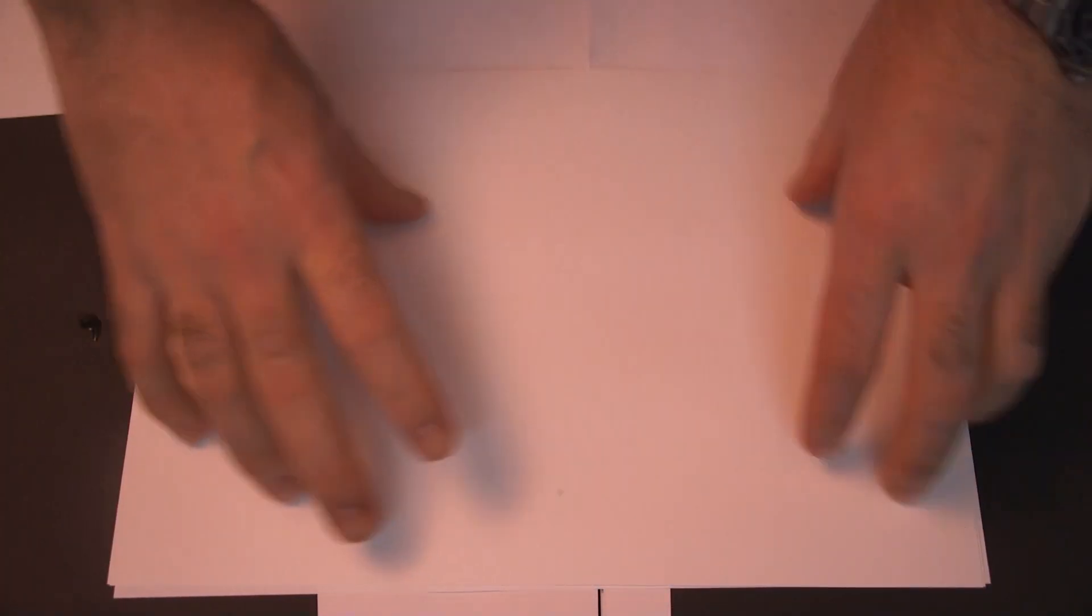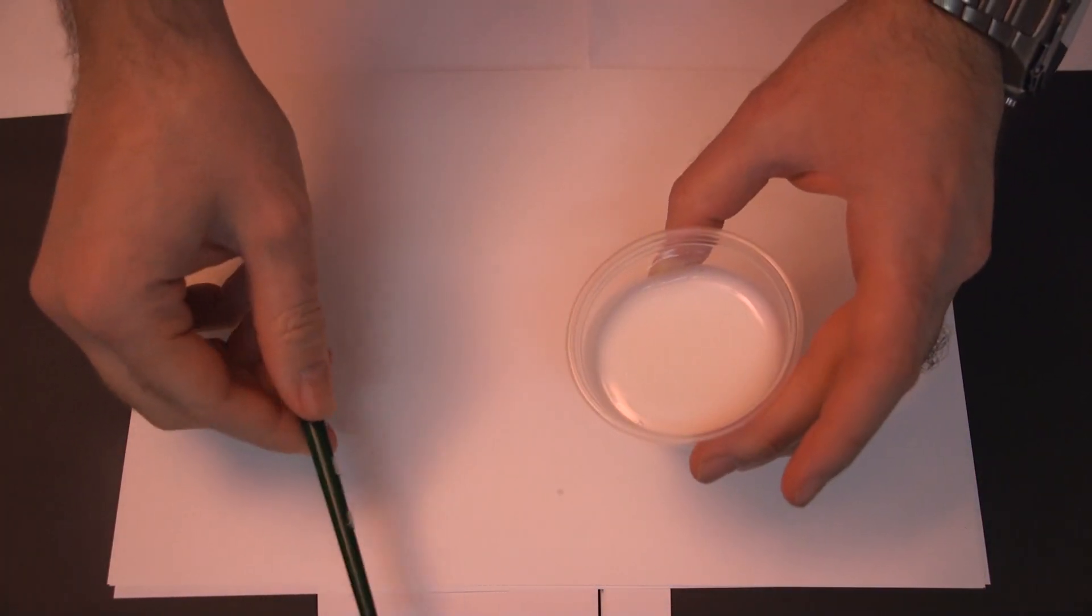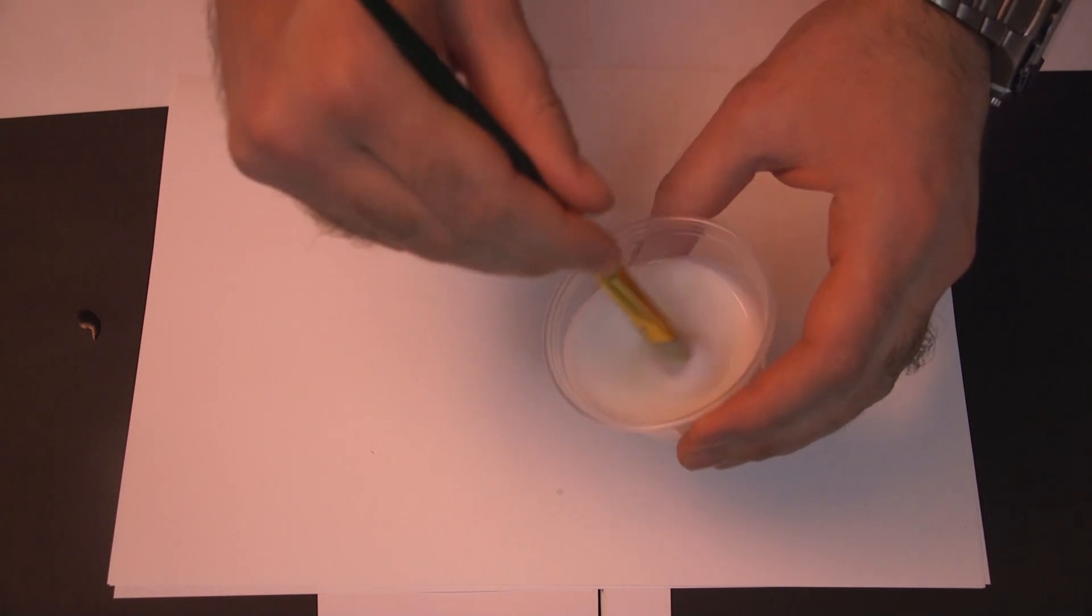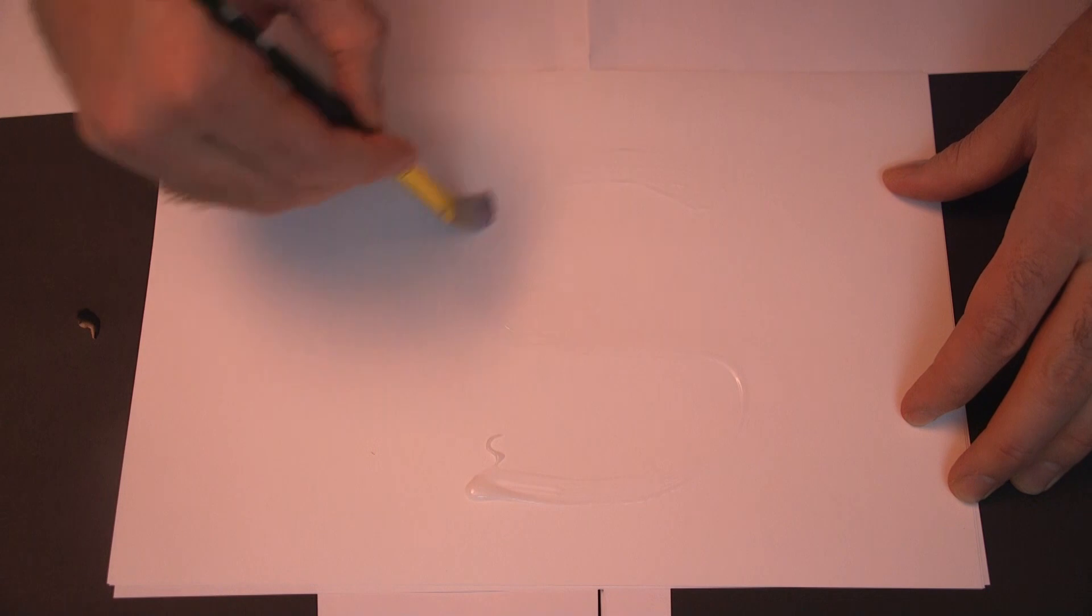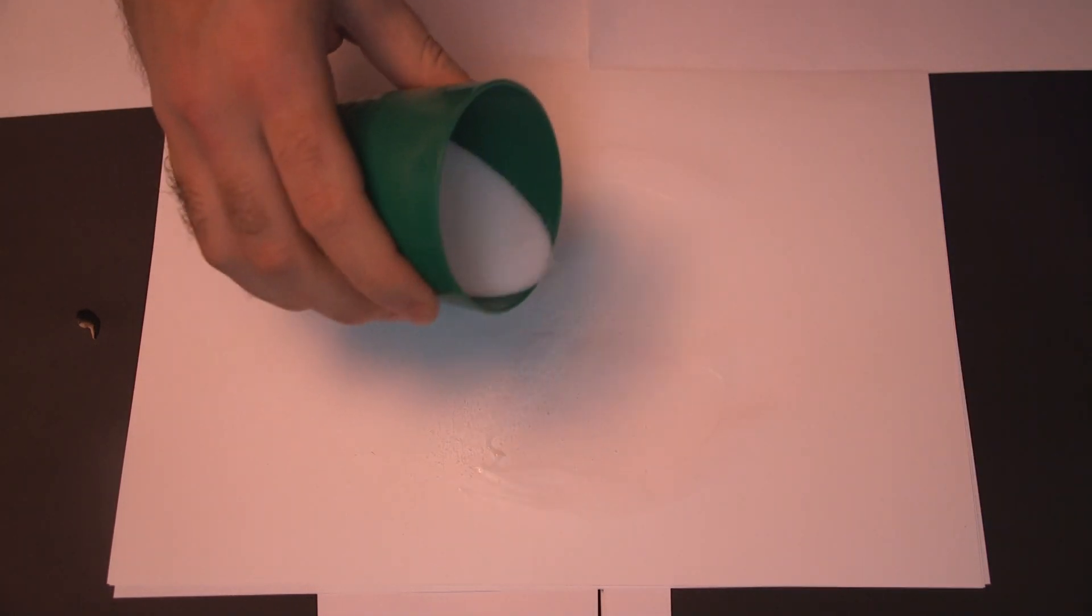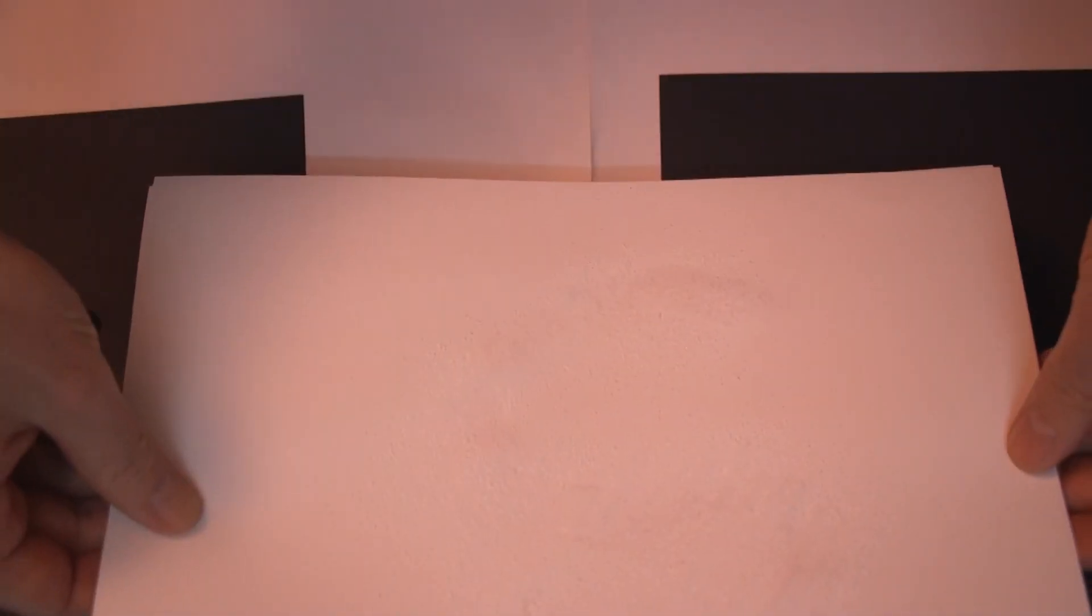So first off, get your paper down and your glue, and then draw your design with your glue. I'm going to do an S here, but you can do whatever you like. Put on a good bit of glue, a nice layer, and then pour your salt on. Shake off the salt that you're not using.